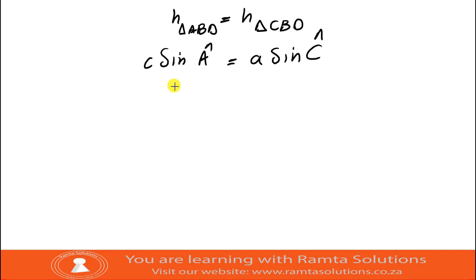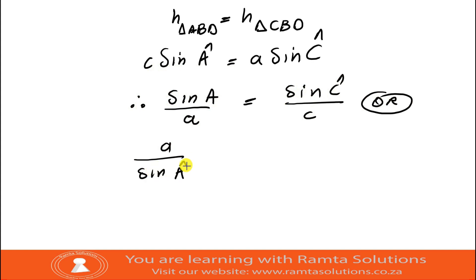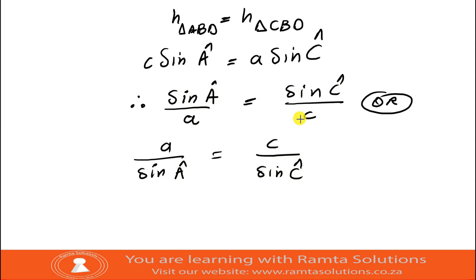Both triangles ABD and CBD have a common side H, meaning H is the same. So H of triangle ABD equals H of triangle CBD: c sine angle A equals a sine angle C. Dividing by a and c throughout, we get sine A over a equals sine C over c, or equivalently a over sine angle A equals c over sine angle C.